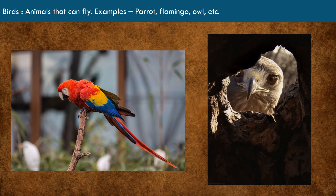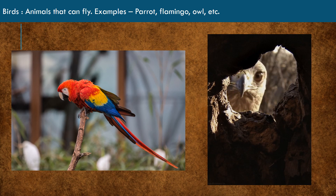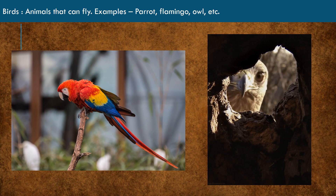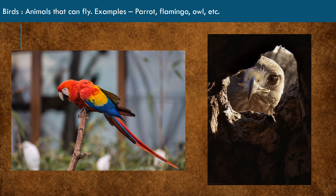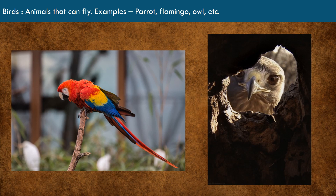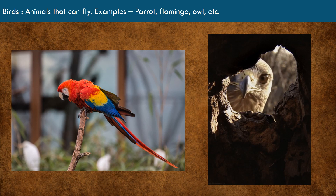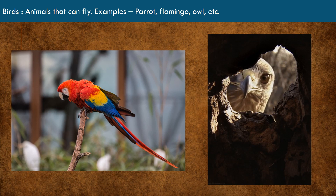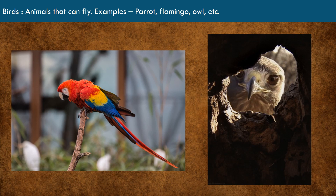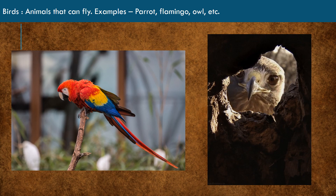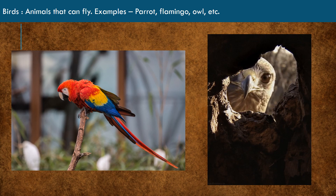Birds: birds are animals with backbones, wings, and feathers. Most birds can fly. For example, parrot, flamingo, owl, etc.